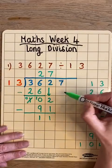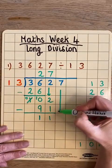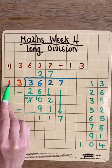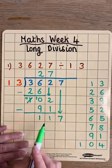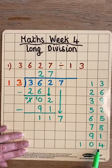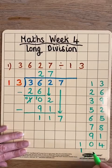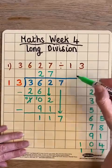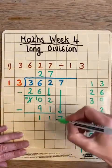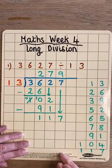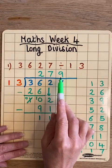How many 13s will fit into 117? I know that 8 thirteens was 104, so I'm very close. One more 13 will make 117, so 9 thirteens fit exactly into 117, leaving no remainder. That means my final answer is 279.